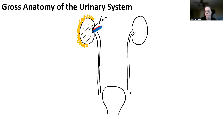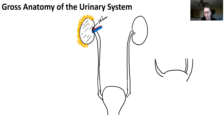The bladder is just a hollow muscular sac that basically is meant to hold urine. It actually has essentially four sides. When you look at it in a sagittal view, what you should see is that there's a ligament in the front that's attached to the front body wall, and then there are going to be two ureters that basically come down to the posterior side of the bladder.